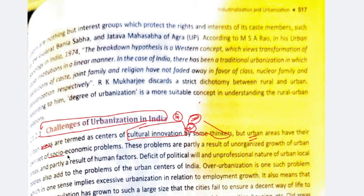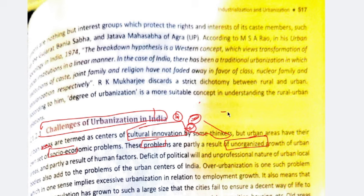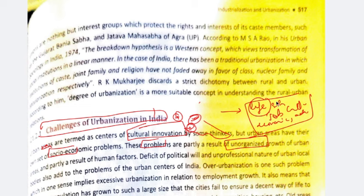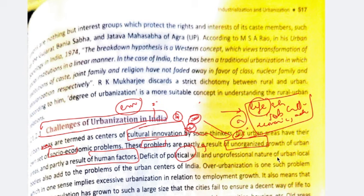But urban areas have socio-economic problems — both a societal aspect and an economic aspect. These problems are partly a result of unorganized growth. The growth is not organized — it is not that as cities are spreading, people automatically get a good lifestyle, jobs, economic advancement, or cultural advancement. Growth is happening in an unorganized way. There is also a lack of political will to improve these areas, and the unprofessional nature of urban local bodies also leads to problems of urban centers in India.